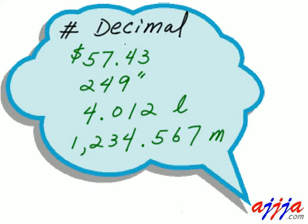Decimal number — decimal means based on 10, right? So all these numbers are based on 10. That's why when we have 10 or more than 10, we carry over to the next higher digit.